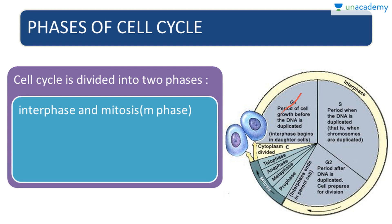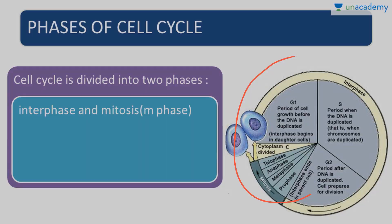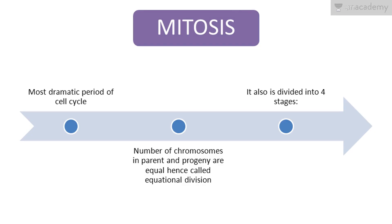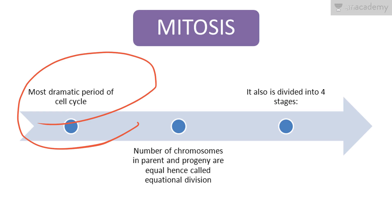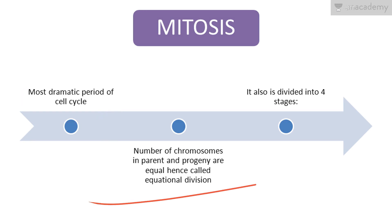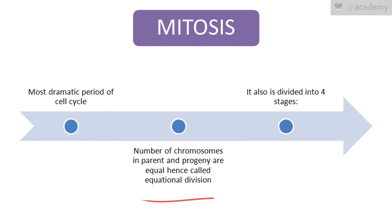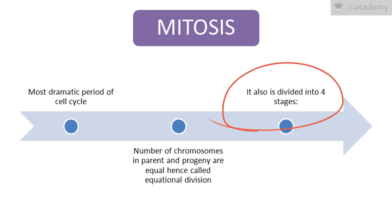Please learn the G1, S, and G2 phases. Now we'll move on to mitosis. Mitosis is the most dramatic period of the cell cycle. The number of chromosomes in the parent and progeny cells are equal, and hence mitosis is also called equational division. It is broadly divided into four stages, although it should be understood that there is no clear-cut division between them.